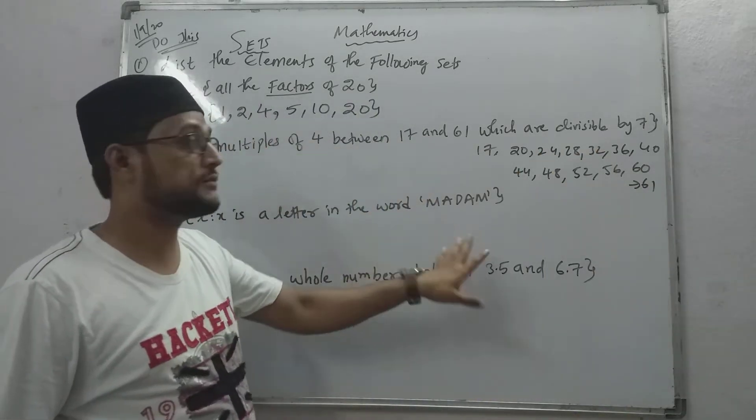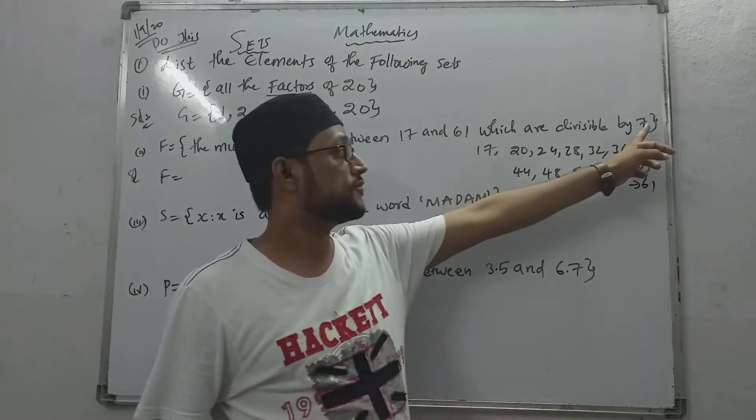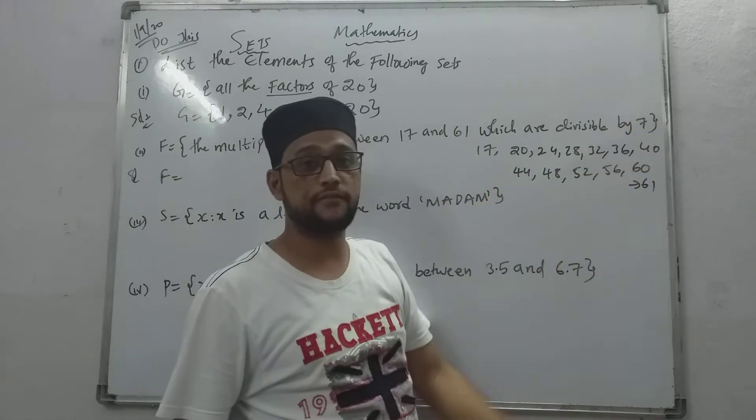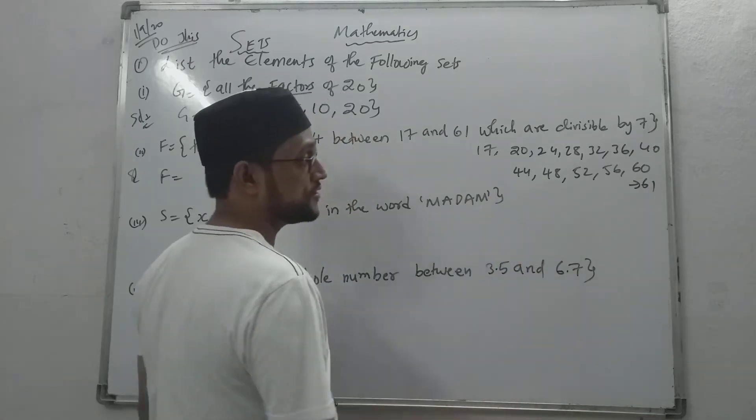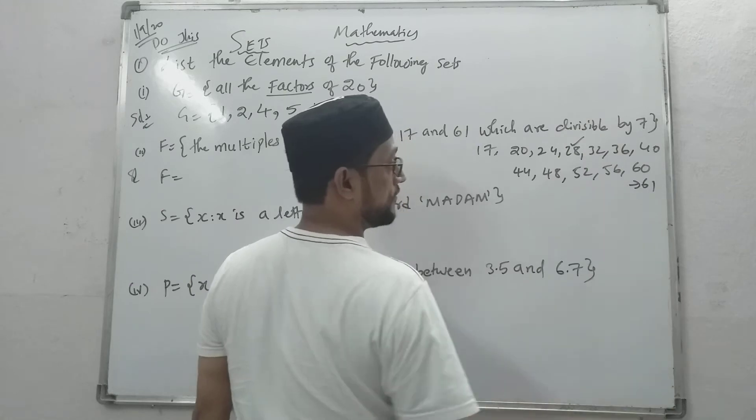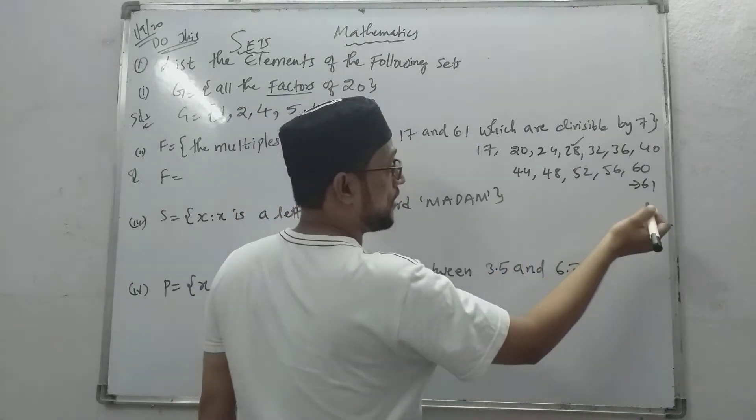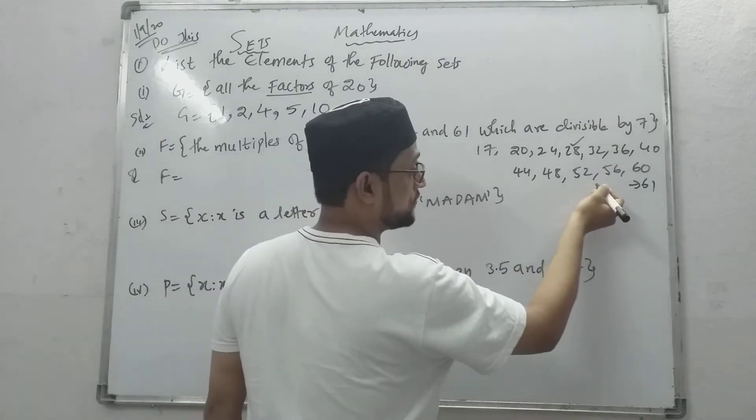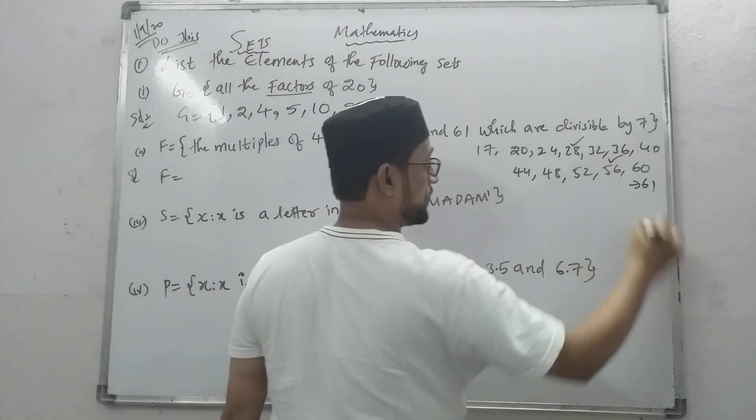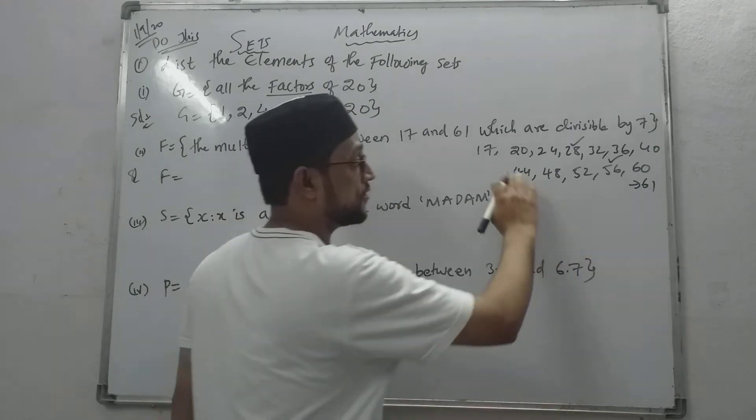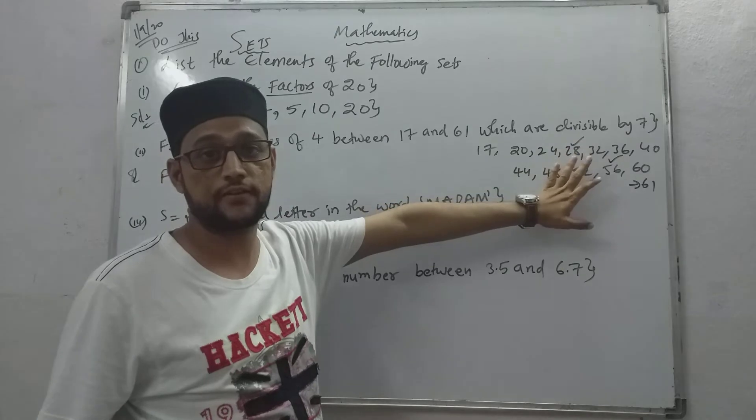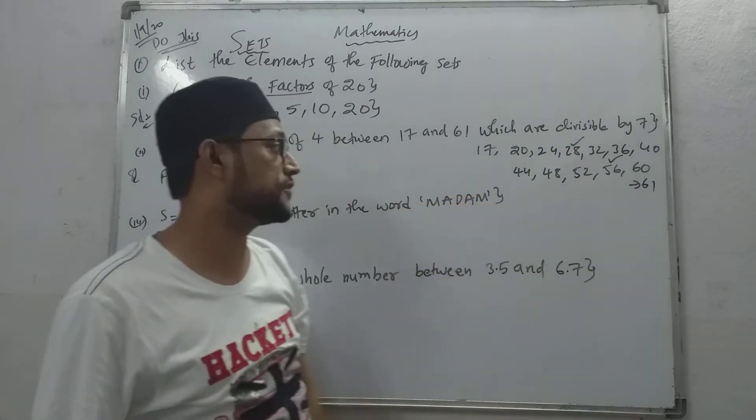Now after this, we have to see which number is divisible by seven. Which number is divisible by seven? You can see here - this one. Seven fours are twenty-eight. Yes, correct? Now after this, seven sixes are forty-two. Seven eights are fifty-six. This one. Now remaining, there is no other remaining number that can be divisible by seven. That means only twenty-eight and fifty-six.